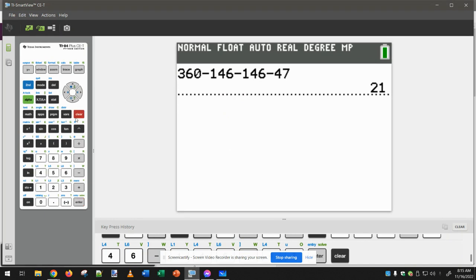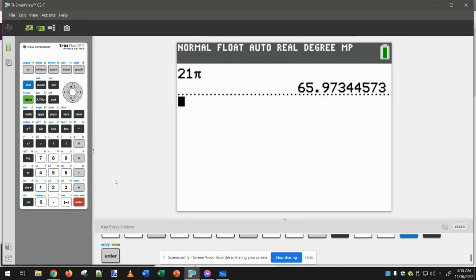So I have to get out my calculator. 21, find the pi button. Enter. And if I'm going to round to two decimal places,